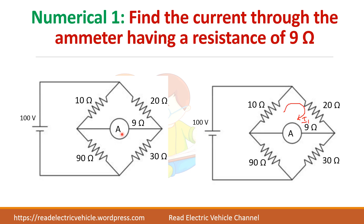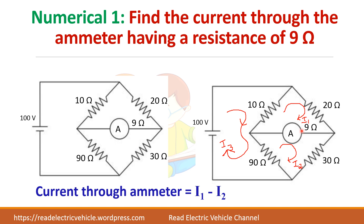First, mark the current directions. There are three loops: I1, I2, and I3, so three equations need to be written. The question is how to find the current through the ammeter — it means you have to find what is I1 minus I2.